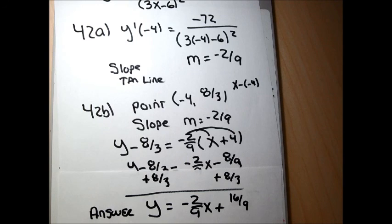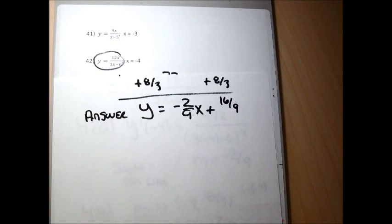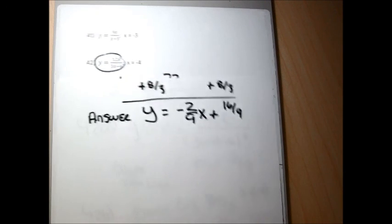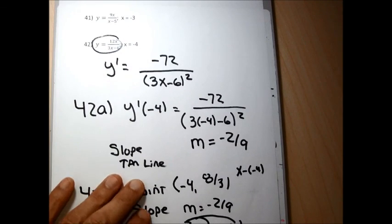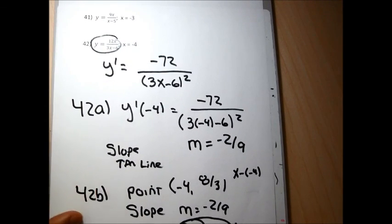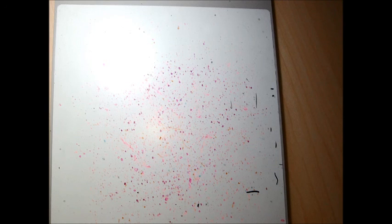These last problems were much quicker because I already had the derivatives done. If you had to redo the derivative from scratch, they'd be a bit more involved. That's the end of section 2.2. We have another rule to learn in section 2.3, which is also somewhat messy, so make sure you have the rules from sections 2.1 and 2.2 perfected before moving on, because you'll need all of them for every problem in the next section.